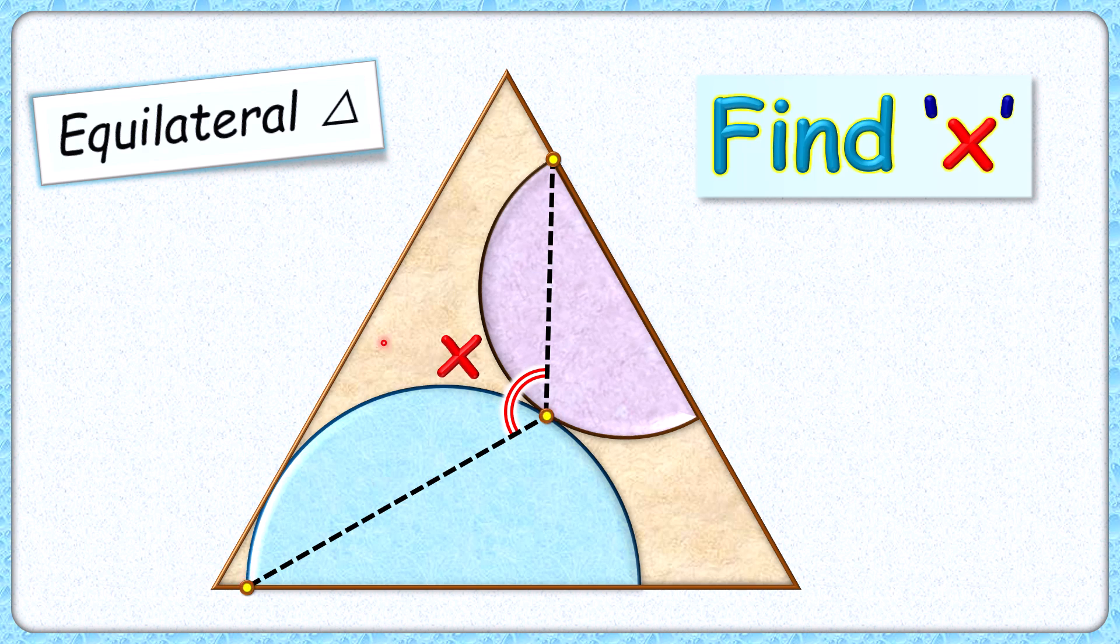Now the endpoints of the diameters are joined to this common point of contact. The exciting part is with this limited data we have to find the angle made by these two line segments, or value of x.